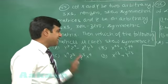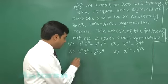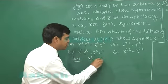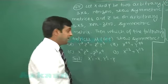So simply it is given X and Y are skew symmetric, so we can say X transpose is minus X, Y transpose is minus Y. Z is symmetric, so Z transpose is Z.